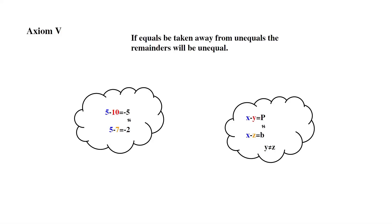Axiom 5: If equals be taken away from unequals, the remainders will be unequal. So 5 minus 10 equals negative 5, and 5 minus 7 equals negative 2. Negative 5 does not equal negative 2, so 10 will not equal 7. If x minus y equals p, and x minus z equals b, and p does not equal b, then y will not equal z.